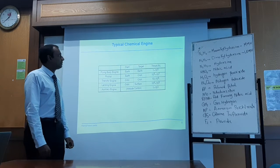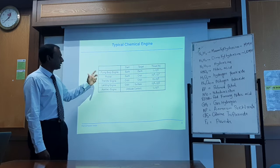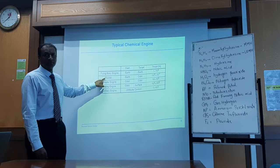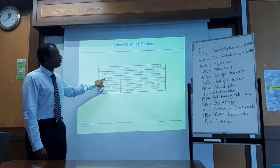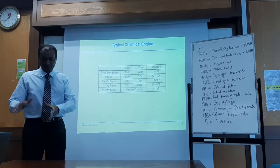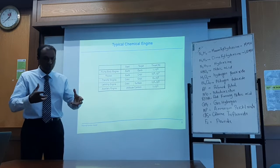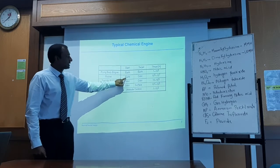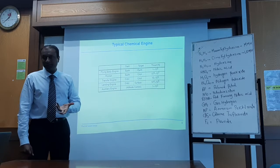Now let's look at chemical engine applications. For rockets, the chemical engine uses a bipropellant — fuel and oxidizer mixed together for thrust — specifically for Earth-to-orbit missions. This is what we are doing in this subject.